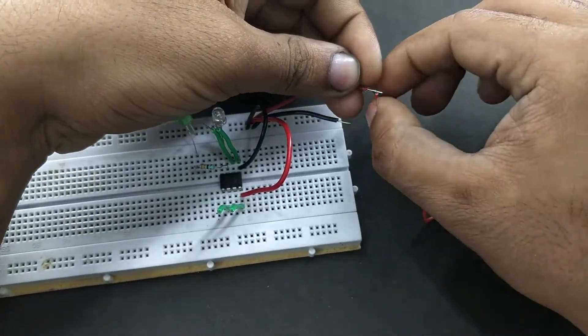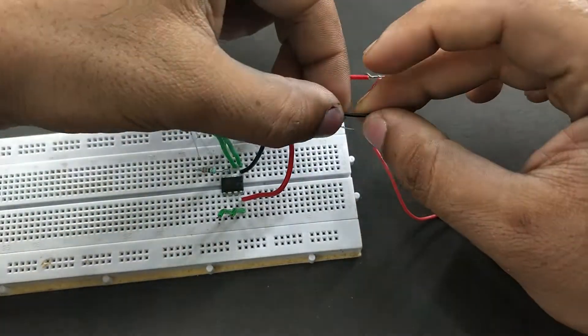Finally, connect a 9V battery to our assigned positive and negative rows on the breadboard and our setup is ready.